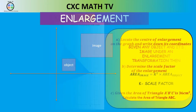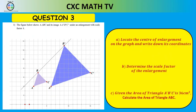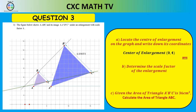For part A, draw lines through image and object corresponding points. Lines for C and C prime, and A and A prime, all intersect at the point (0, 4). So the center of enlargement is (0, 4). For part B, BC is approximately 2 units and B prime C prime is 6 units, so the scale factor is 6 over 2, which equals 3.